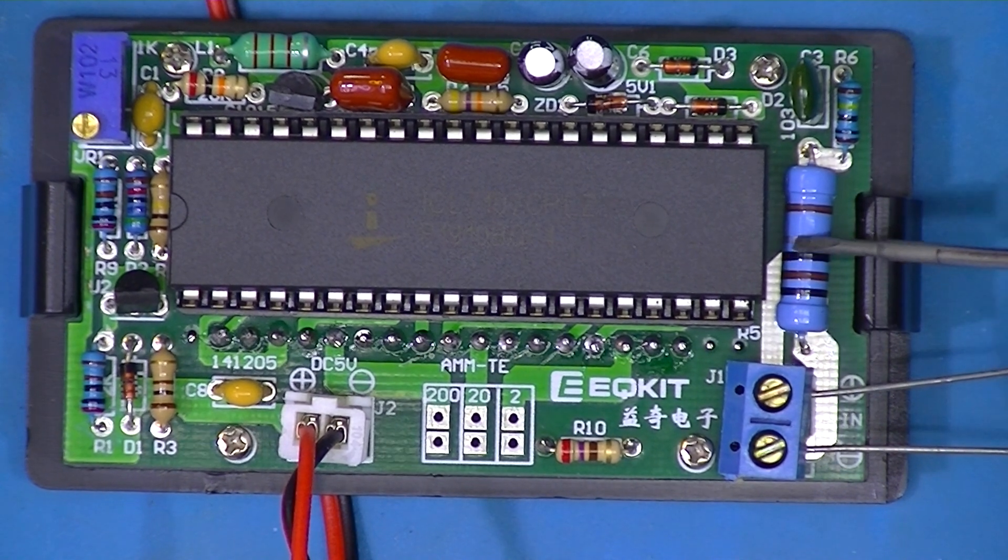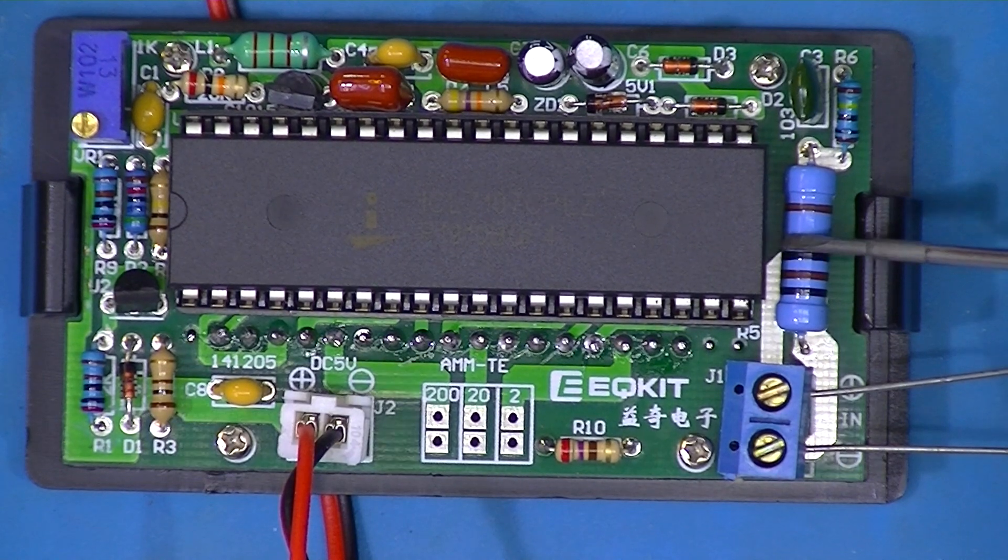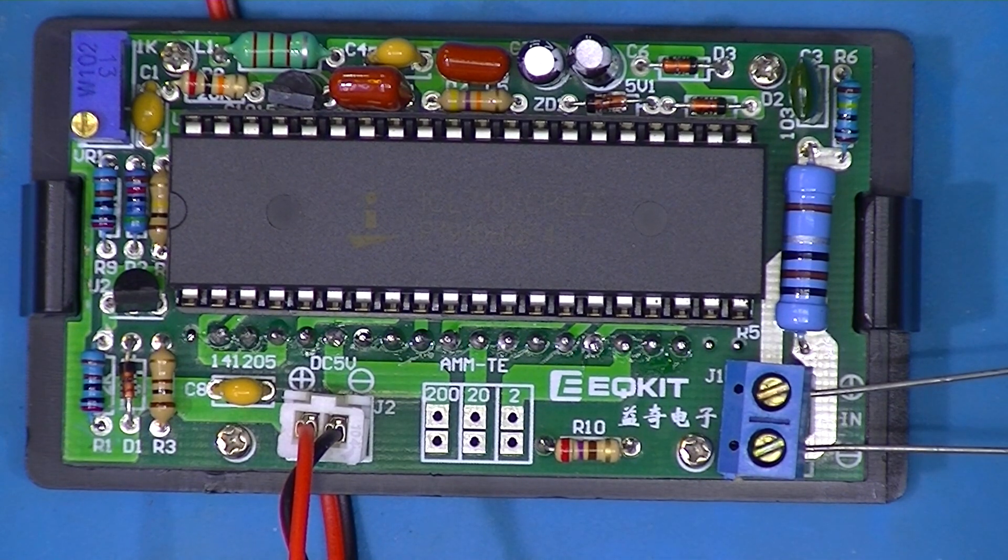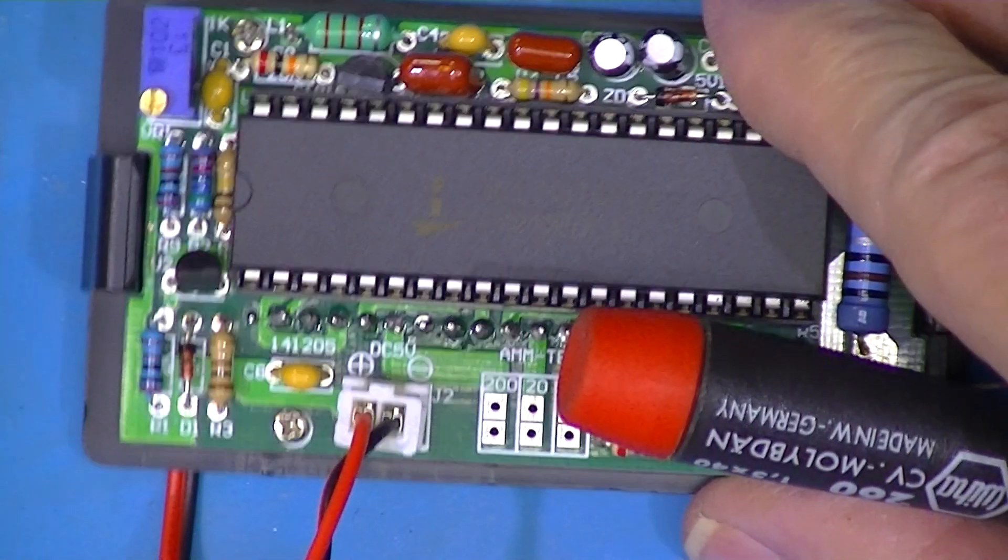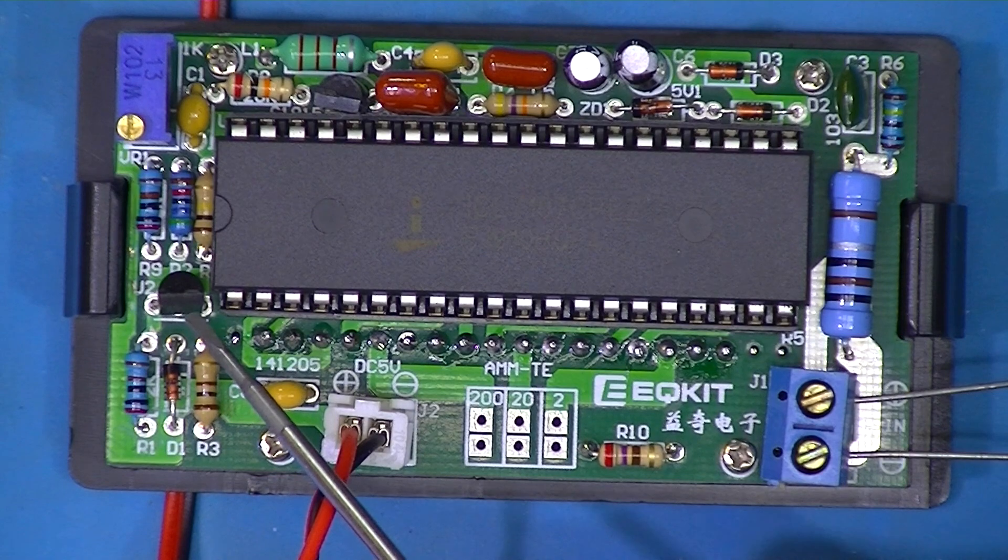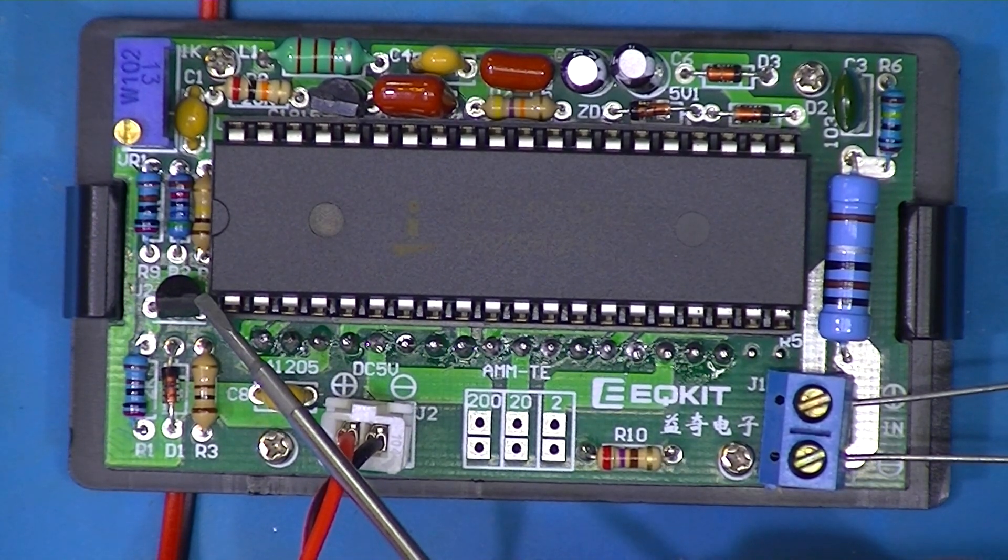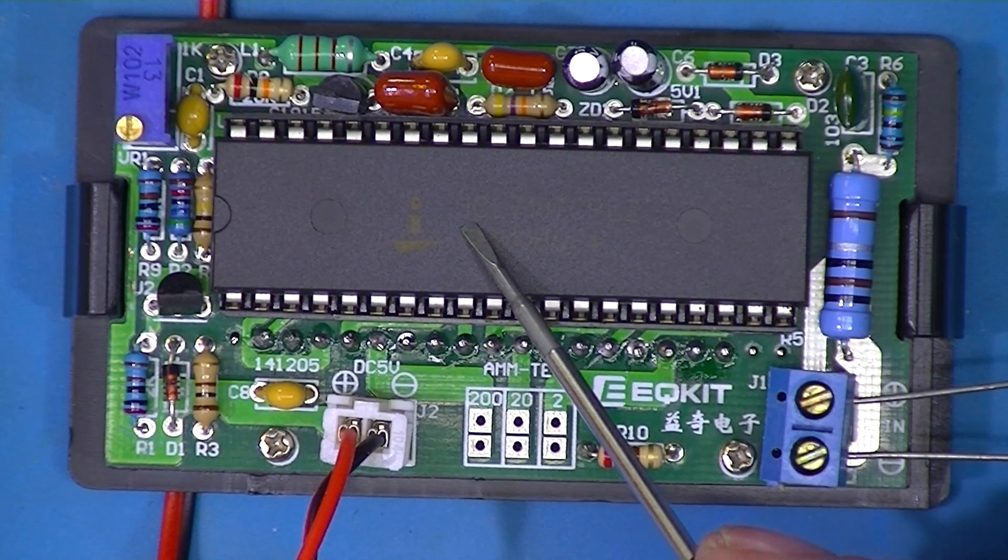This is our shunt resistor, 0.1 ohms, it's called R5. We got some more resistors here. This is the voltage reference and it's called U2. This big thing is U1 by the way.